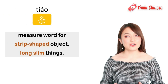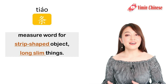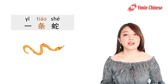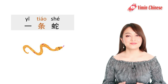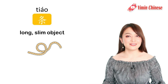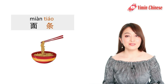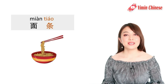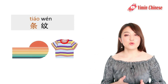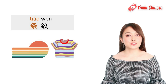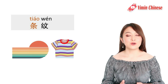Next measure word is 条. 条 is the measure word for strip-shaped objects — long, slim things — like 一条蛇, a snake, because it's long and slim. 条 itself is a noun meaning 'long slim object'. You can see it in words such as 面条, noodles, because they're long and slim; and the word 条纹, which means 'stripe', like the stripes on your clothes or on some countries' flags.